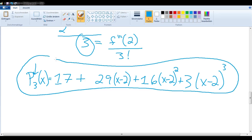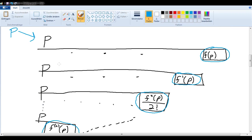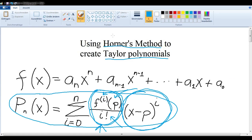So Horner's method works perfectly for Taylor polynomials since what you need is what you get at the end of each line. No multiplication involved. So yet another usage of Horner's method.